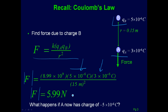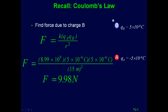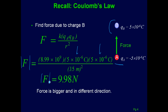Now what happens if we replace this charge with a charge of negative 5×10⁻⁶? We have that same Q_B and now apply the force on a different charge, but we do everything the same. My two charges are both 5×10⁻⁶ — I neglect the negative sign since I'm only worried about the absolute value — and I get an answer of about 10 newtons. In this case the force is attractive. So the force comes out bigger and in a different direction. But can we make this easier?